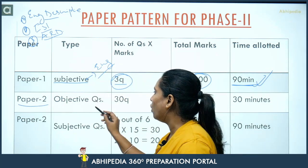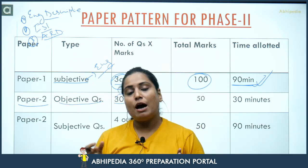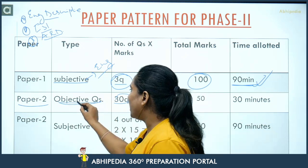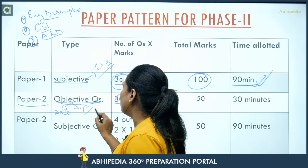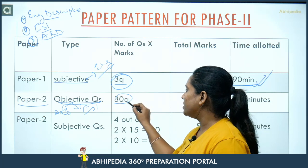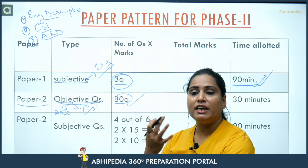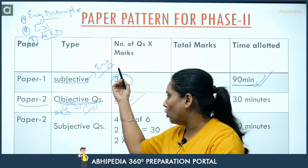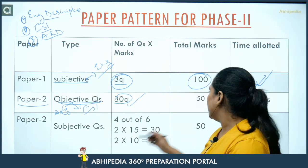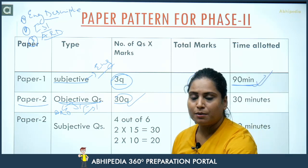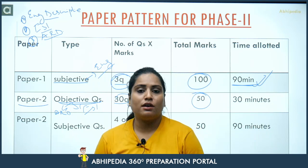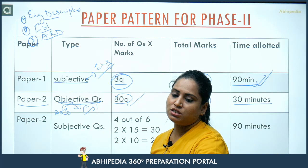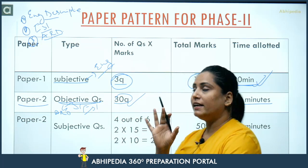Aur agar hum Paper 2 ki baat karein — Paper 2 involves 30 questions that are objective. Hamare paper mein ESI aur ARD mein objective plus subjective questions dono available rahenge. Objective questions mein ARD ke kuch aur ESI ke kuch questions rahenge — total 30 questions, dono ko mila ke. 15 ARD ka ho sakta hai, 15 ESI ka ho sakta hai — koyi specification abhi tak di nahi gayi. Hum think kar rahe hain ki objective mein ARD ke 15 questions hain and ESI ke questions rahenge. Total marks 50 diye gaye hain, jis mein kisi question ka 2 marks hoga, kisi ka 1 mark — is type se marks distribute kiye jayenge. Total time allot kiya gaya hai 30 minutes.